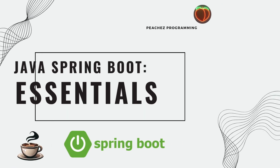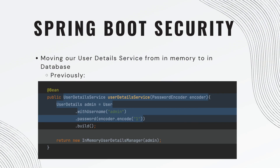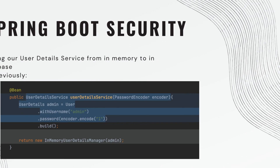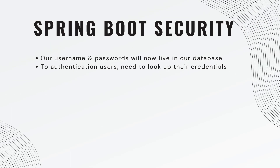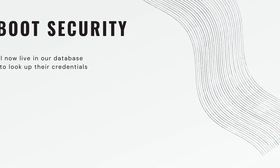Welcome back. Today we are moving our user detail service from in-memory to our database. Previously we took the quickest way to get this working — we implemented an in-memory user detail service, meaning we just said here's a user with a name 'admin' and a password of 'one' so that anytime we try to authenticate, it's already there. Of course this is not a very scalable solution; we want our usernames and passwords to be saved in a database and retrieved when necessary.